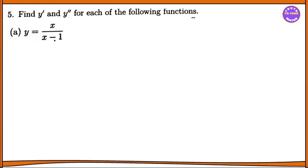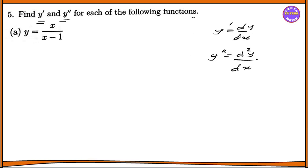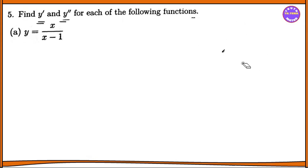In the next section, the first section is page 11.4. Exercise 11.4, number 5. Number 5 involves the prime, which is the same as the change differentiator. We use the chain rule for each of the following functions.